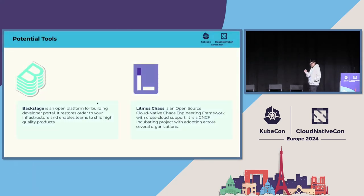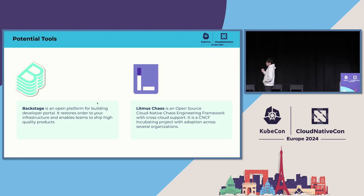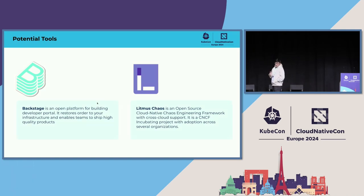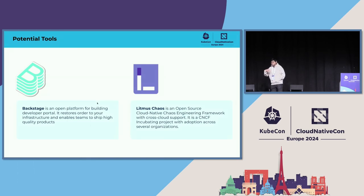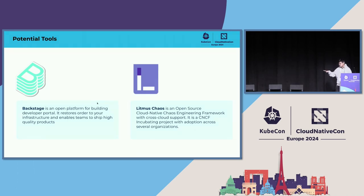These are some of the tools we'll be using — just for the demo; you don't have to use them. The two tools are Backstage and Litmus. Backstage is an open platform for building developer portals — there was even a Backstage conference yesterday. Litmus Chaos is a CNCF incubating project and is open source, as is Backstage. You can use them combined to realize the chaos-first idea I've described. You can also use other tools and open APIs — it's just an example.